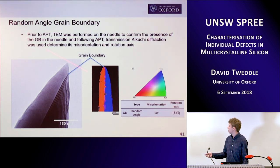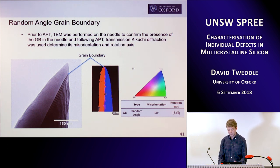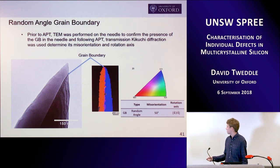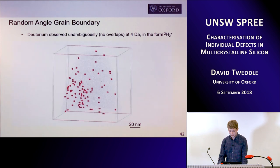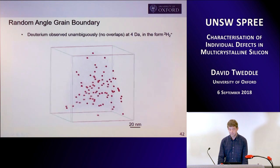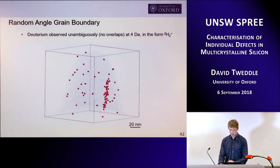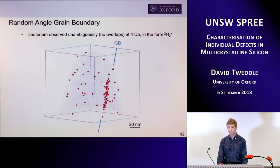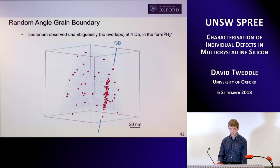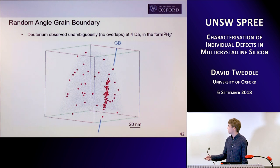Before atom probe, we did TEM to confirm the grain boundary is in the tip. Transmission Kikuchi diffraction allows the misorientation and rotation axis of the grain boundary to be determined — we've got around 50 degrees misorientation. When we go to atom probe, we can observe deuterium unambiguously at this grain boundary. The reason I say unambiguously is because we're detecting deuterium at four Daltons in the form of 2H2+, and there's no overlap. We don't see any peak at four Daltons before deuteration of the random angle grain boundary, and then after deuteration we observe this increase of deuterium at the grain boundary.